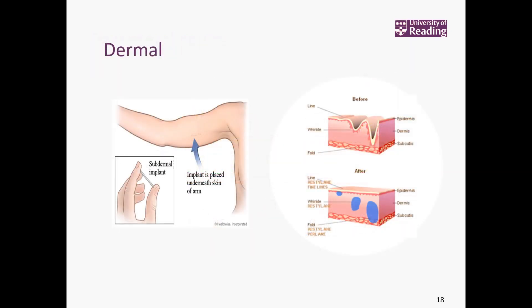We'll look at the dermal layer — you may hear of this a lot now with the cosmetic surgery industry and dermal fillers, where people have wrinkles treated to give smoother skin. You also see this as an implant — patients may have a subdermal implant as a contraceptive preparation.